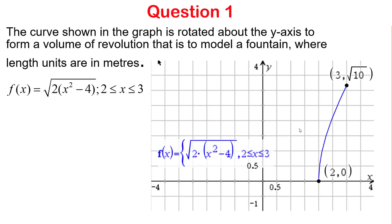First up we're going to look at a question very similar to one from the 2018 examination. We have a curve where you can see the graph, it's a square root function. This is rotated about the y-axis and models a fountain. The length is in meters and the domain is from 2 to 3. From the graph we can see that when x is 3, the y value is root 10.